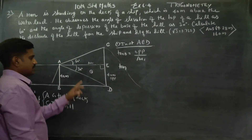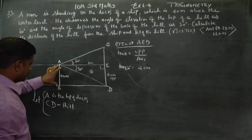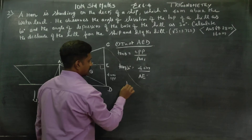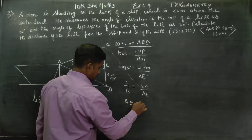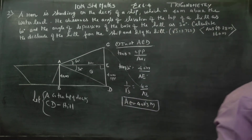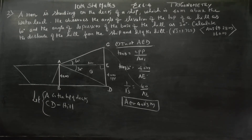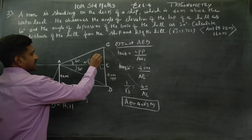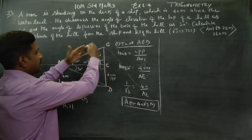Theta will be 30 degrees. Opposite is 40 meters — the deck is 40 meters — by adjacent side AE. Tan 30 is equal to 40 by AE. Cross multiplying, AE is equal to 40 root 3.